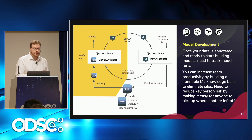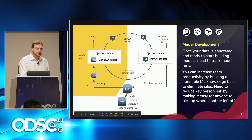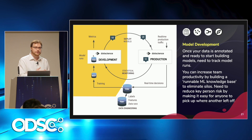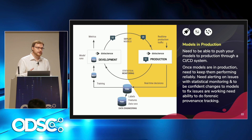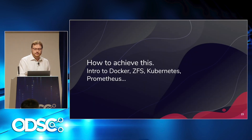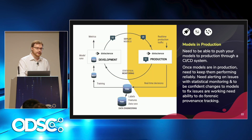Then in the model development process, data is coming in from data engineering. You're training a model on a certain version of a dataset, and you have metrics that come out of that training process that you need to keep track of, plus the model artifacts themselves, which need to be deployed. Those models need to be deployed into a production environment, and once they're running in production they need to be statistically monitored. You need to keep track of the real-time decisions those models are making — decisions that may have an impact on the world and therefore need to be reflected in a changing database used for retraining a later model. You need to be able to go around this loop quickly and safely while keeping track of all the moving parts.